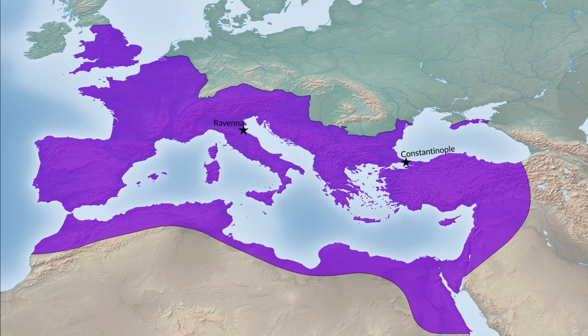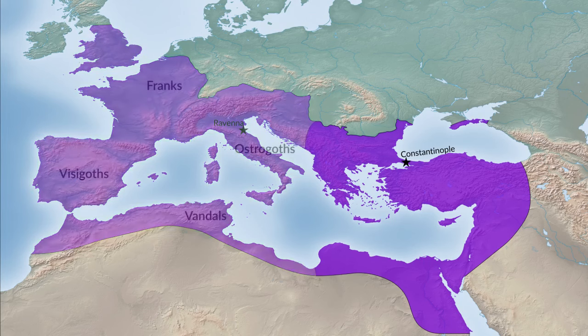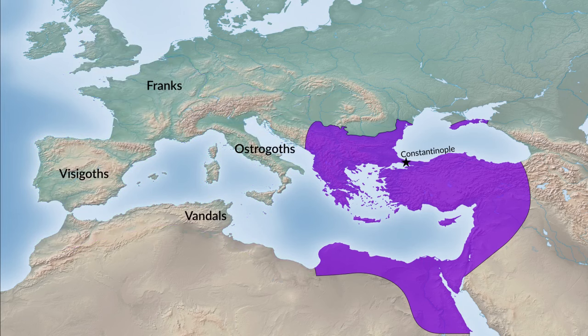But while that was the end of the Western Roman Empire, that was not the end of the Roman Empire, because there was still the Eastern Roman Empire, with its capital at Constantinople. And that empire continued to exist for many centuries afterward.